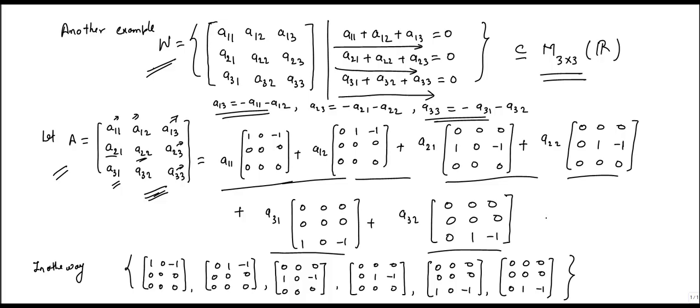So we can see here that this general matrix can be generated using six matrices. So let's collect these matrices in a set. And as we discussed, this collection of these matrices generates any element of W.